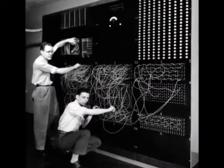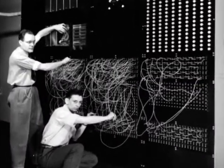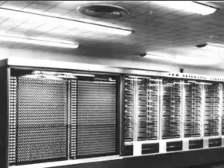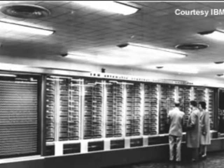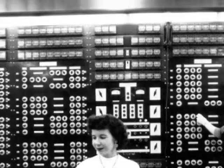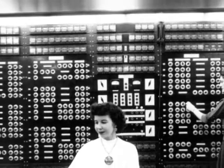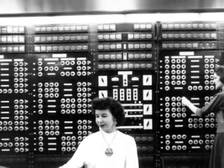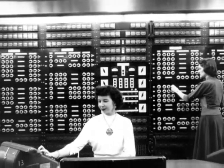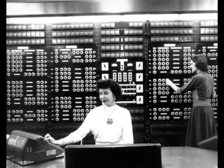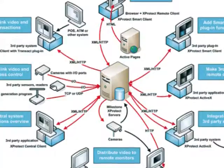The Harvard Mark I was completed in 1944 by Professor Howard Eichen and designed and built by IBM. Harvard Mark I was a room-sized relay-based calculator. The machine had a 50-foot long cam shaft and synchronized thousands of component parts. The Mark I was used to produce mathematical tables but was soon superseded by stored computers.